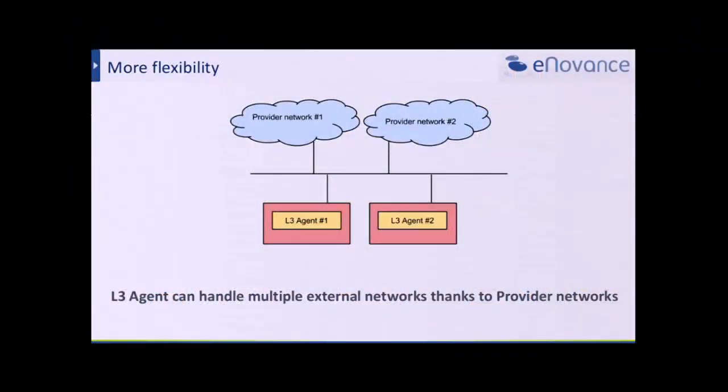The other nice feature — not related to HA but worth mentioning — is the ability to schedule more than one external network to a single L3 agent by using provider networks. Previously you couldn't use more than one external network on the L3 agents, and since Icehouse you can, by using provider networks, having more flexibility with multiple external networks. The use case is probably the public cloud: when you have a lot of floating IP pools, you can now have multiple external networks and connect them to the provider networks.